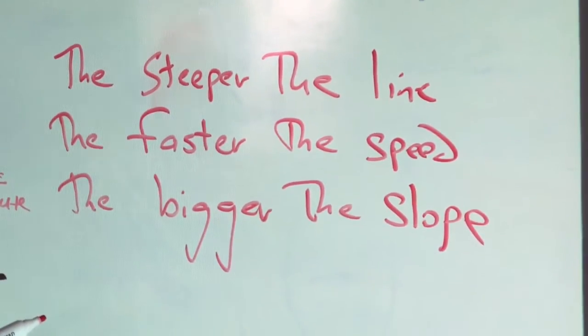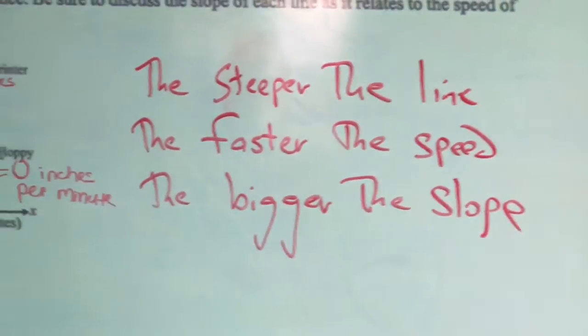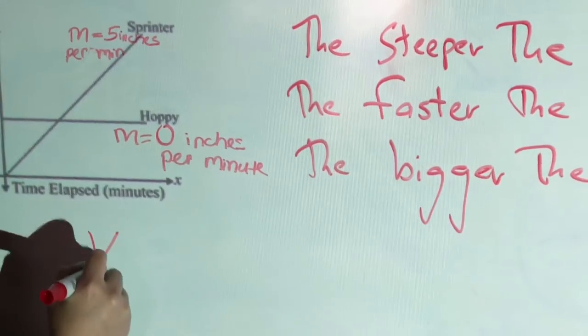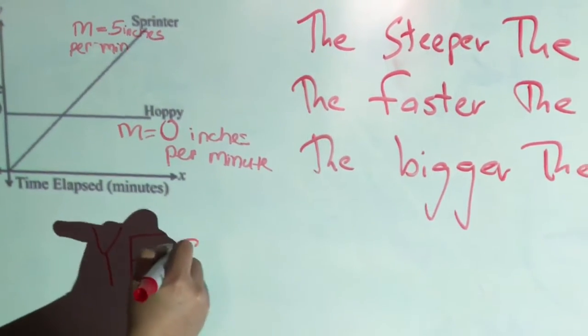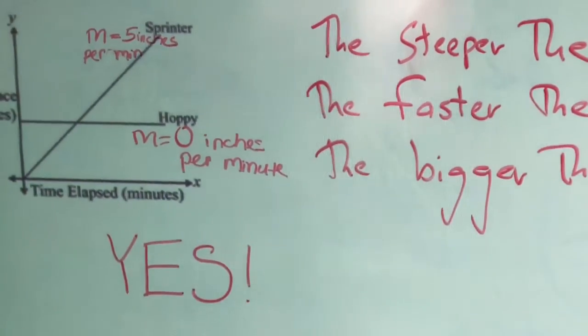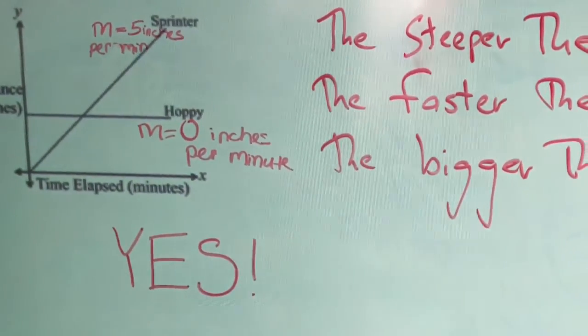Does that apply to our turtles, Hoppy and Sprinter? Let's look. Let's go back to our graph. And oh yeah, look, the steeper the line, it looks like Sprinter has a very relatively steep line. And therefore it's true. Yes. Faster speed, five inches and bigger slope. M is equal to five, much bigger than M equals zero.